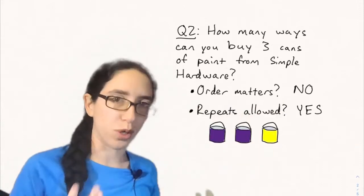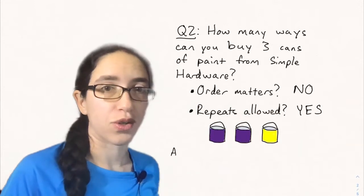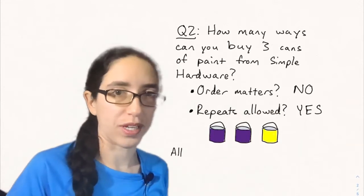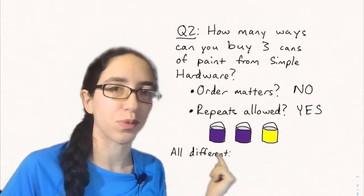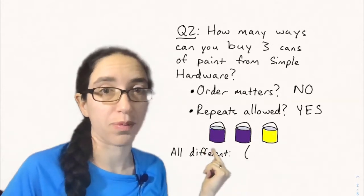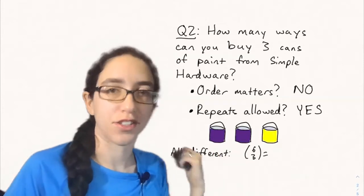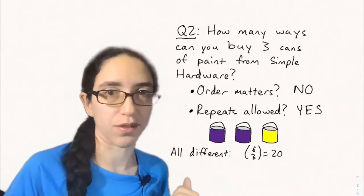So one way we can approach this is using cases. So we could say how many of these are the same versus different. So first let's count the case where they're all different. We just did that in the previous problem. If all the colors are different then there's just 6 choose 3 or 20 ways of choosing them.